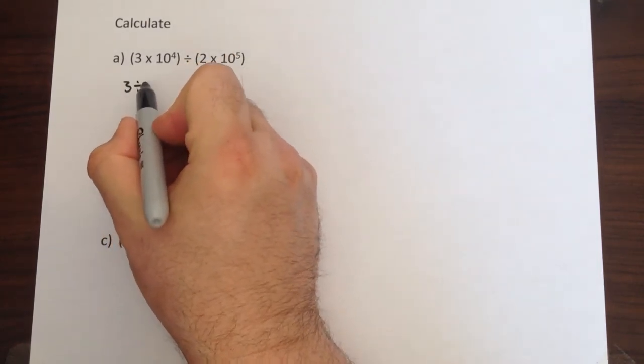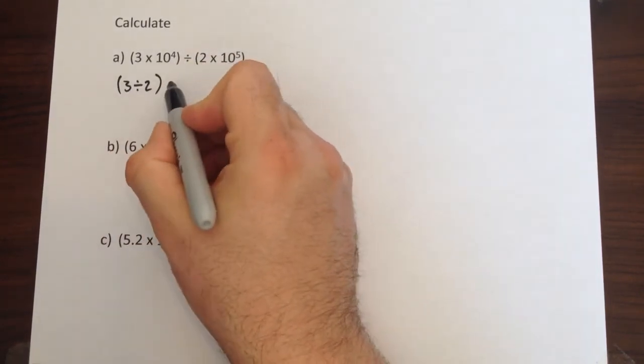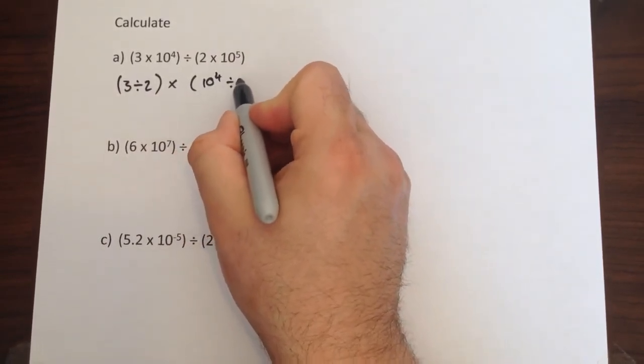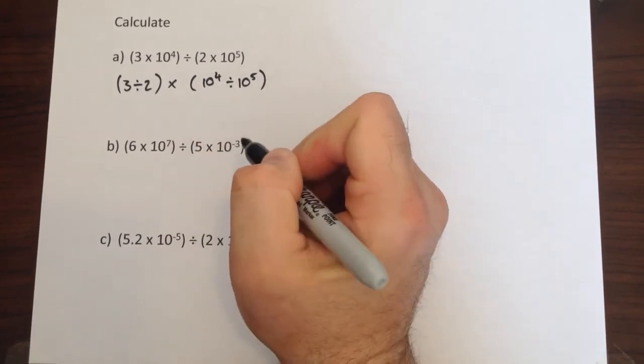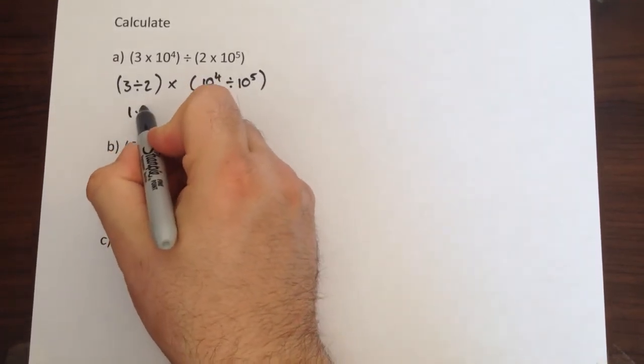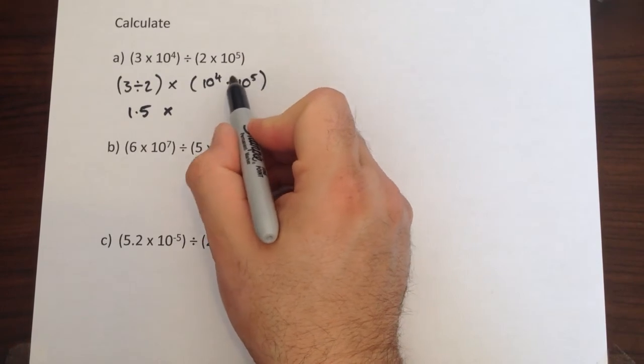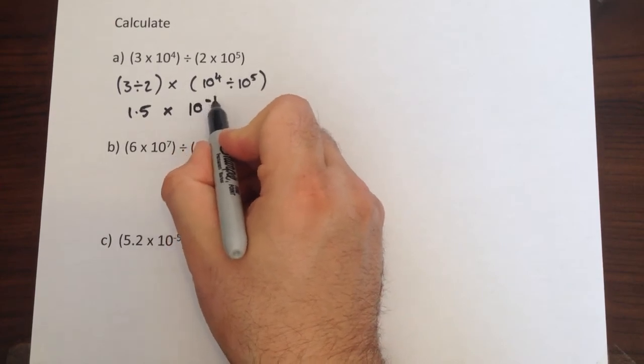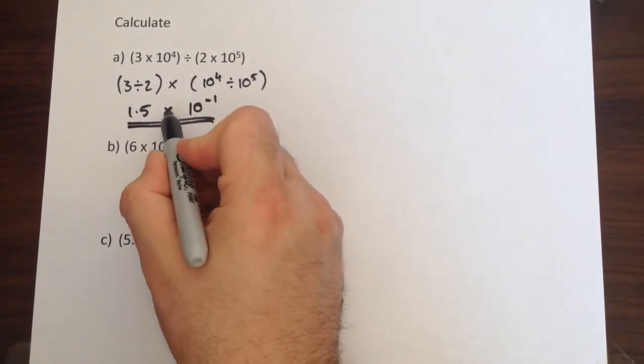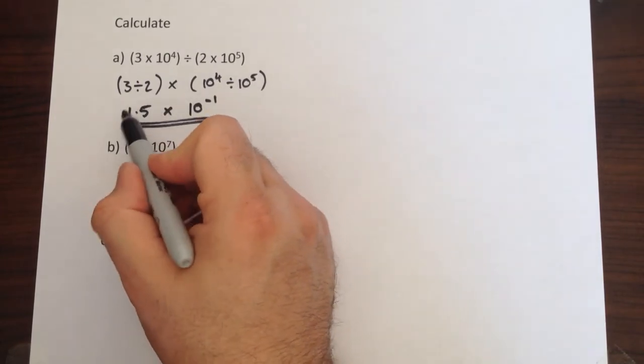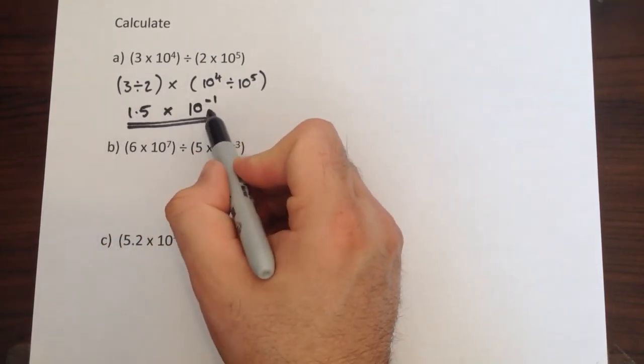First of all we're going to do 3 divided by 2, and secondly we're going to do 10 to the 4 divided by 10 to the 5. 3 divided by 2 is 1.5, and 10 to the 4 divided by 10 to the 5, when you divide index numbers you subtract the powers, so 5 take away 4 is negative 1. And there's still a multiply sign in the middle because that's the format standard form numbers take, a number less than 10 multiplied by a power of 10.